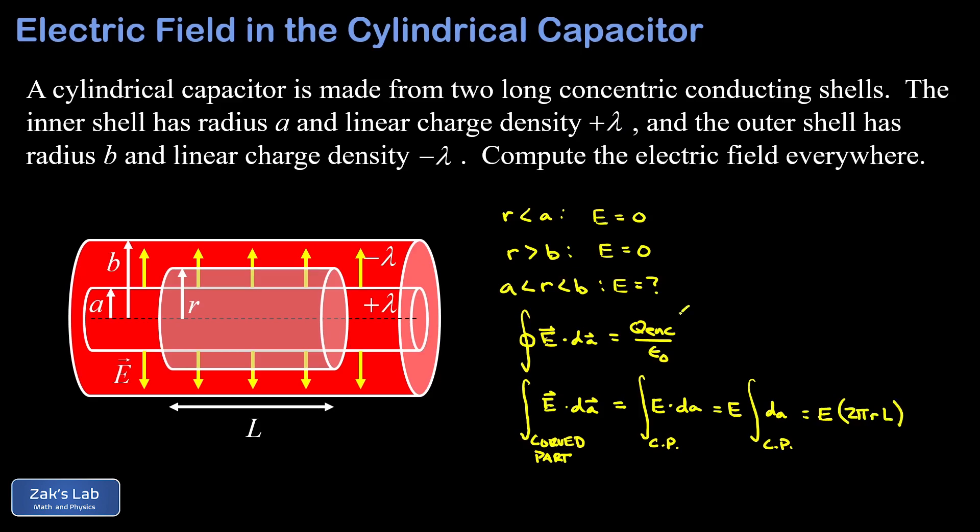We still have to go back and set it equal to the enclosed charge divided by epsilon zero. So on the left side I have E times the area of this curved surface, 2πrL. On the right side I have q enclosed. To get the charge enclosed within our Gaussian surface, we have to take the linear charge density measured in coulombs per meter and multiply by the length measured in meters. In other words, q enclosed is simply lambda times L.